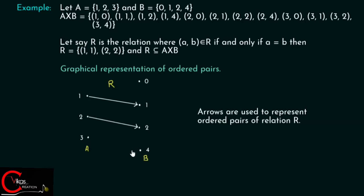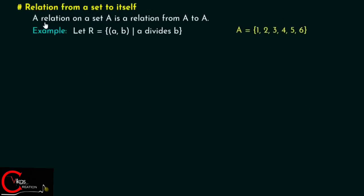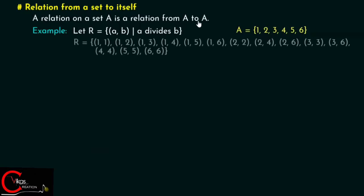We have seen how to define a relation from A to B. Now we will see how to define a relation from a set to itself. A relation on a set A is a relation from A to A. Please remember this.